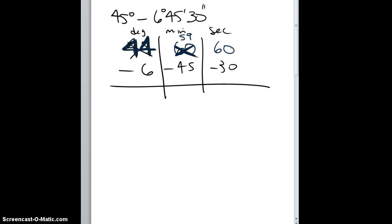At this point, now that I've ungrouped, I can subtract. I get 30. I subtract here, I get 14. I subtract here and I get 38. This is my degrees, this is my minutes and seconds. So my answer is 38 degrees, 14 minutes, and 30 seconds.